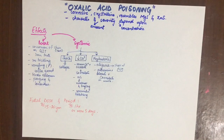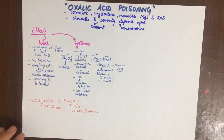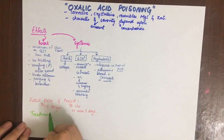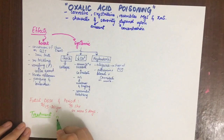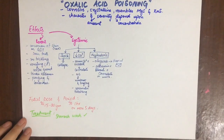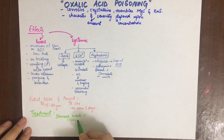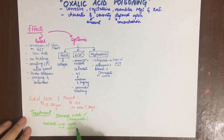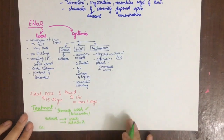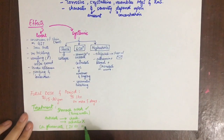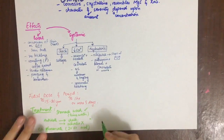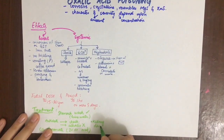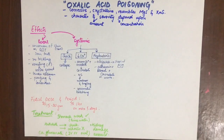In acute oxalic acid poisoning, treatment includes stomach wash because the degree of corrosion is less than that of mineral acids. A soft stomach tube is passed and lime water can be used for gastric lavage. Warm water is not used because it dissolves more acid. An antidote such as any calcium preparation like chalk, which converts oxalate into calcium oxalate, can be used. Alkalies are not used because their oxalates are soluble. Kidney damage is also assessed, and the rest is symptomatic treatment.